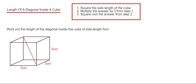So this cube has a side length of five centimeters. So our first job is to square this number. So five squared is five times five, which is 25.